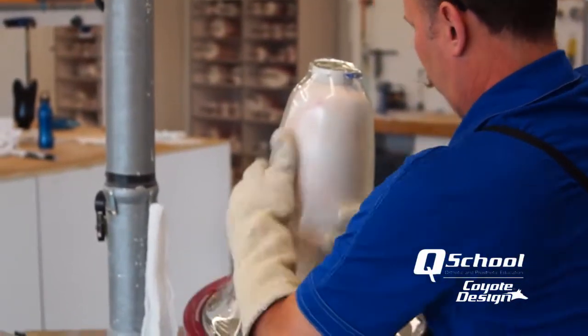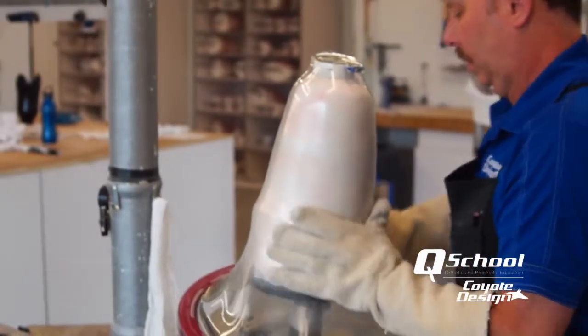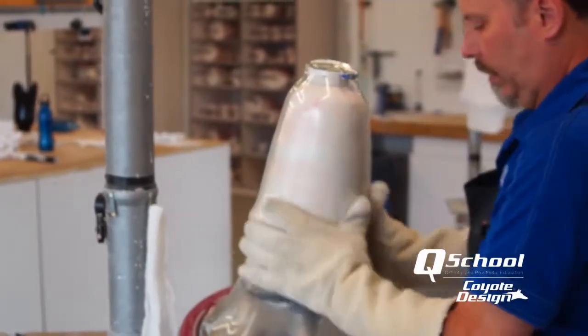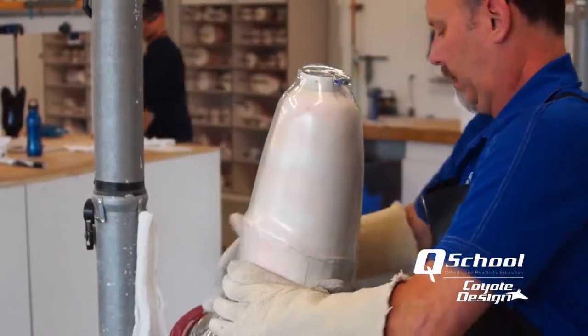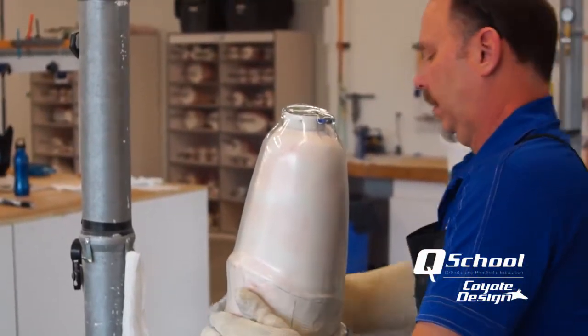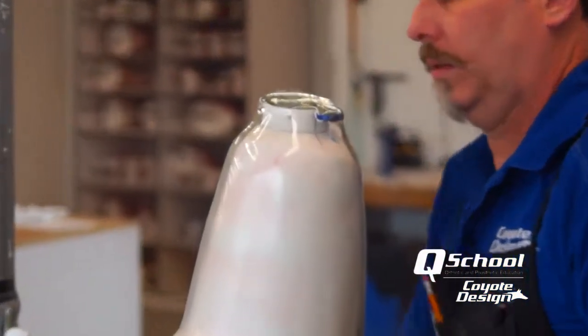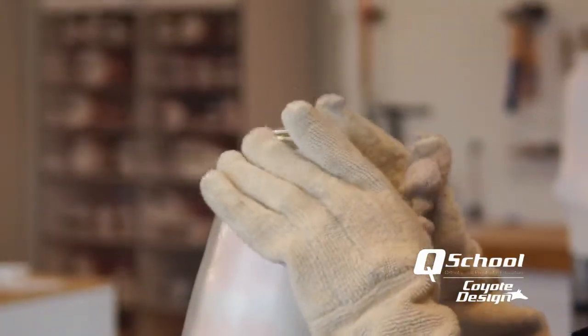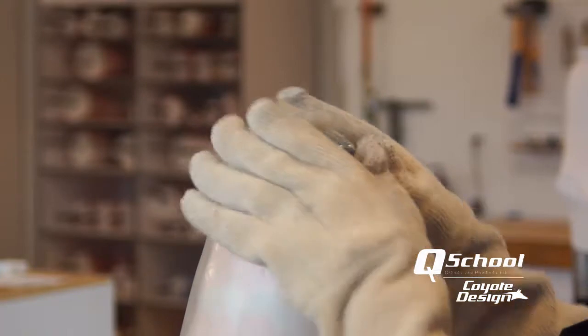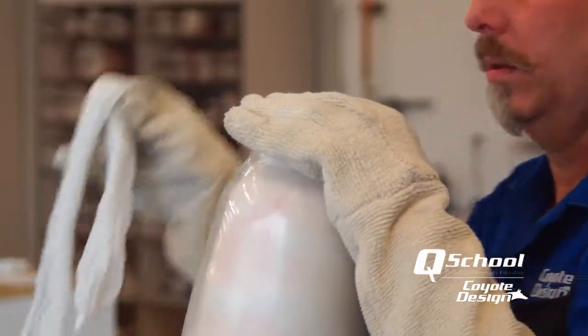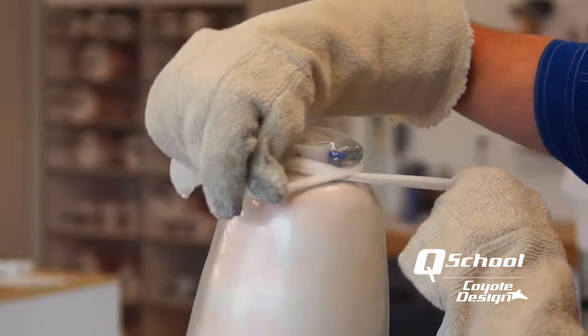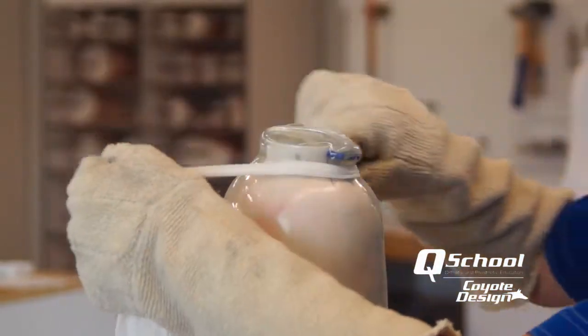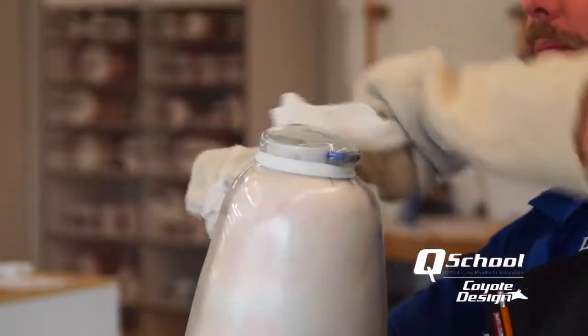So once I hit vacuum here, the next thing I'll do is help coax that Vivac in around the base of the lanyard puck. You can see we've hit vacuum, everything's drawn down nice, but we need to help this up here on the distal end just a little bit. So I'll take a vacuum nylon and coax it in. And what you don't want to do is wrap it around it super tight like that and strangulate it. You just want to help coax it and keep coaxing it in nice and easy.